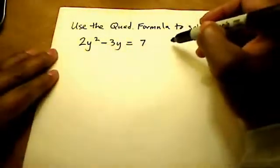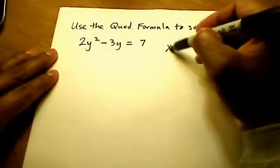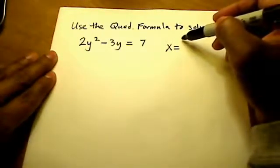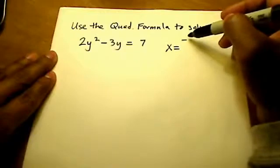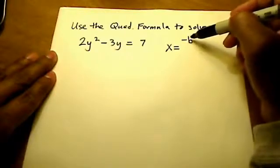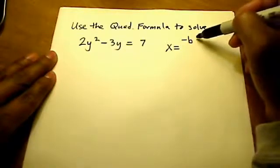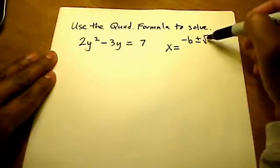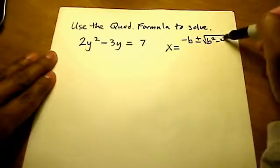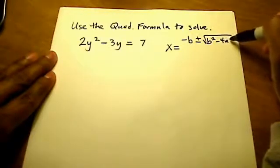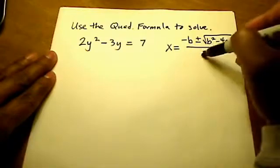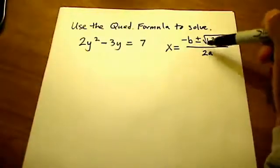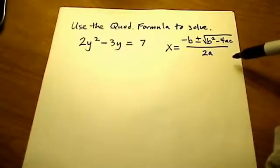I should probably write that down for you, and it's a good thing for you to memorize. The formula is x is equal to negative b — or sometimes read as the opposite of b — plus or minus the square root of b squared minus 4ac, all over 2a. So this quadratic formula uses a, b, and c.